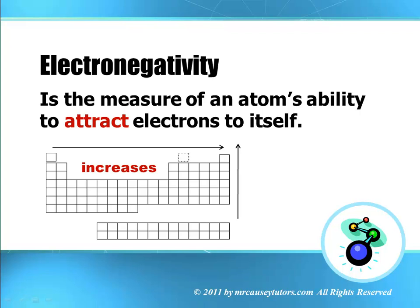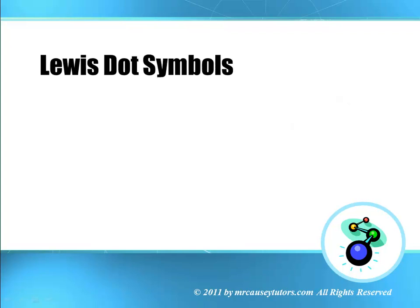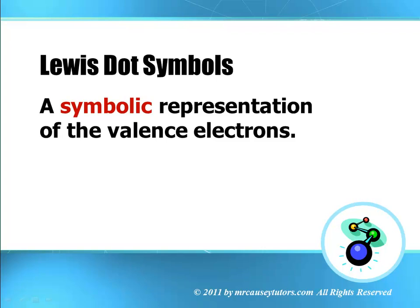Remember, noble gases do not have electronegativity. They do not want to give up electrons and they do not want to gain electrons. Lewis dot symbols: a symbolic representation of the valence electrons. And here's sulfur's representation. There we go. Very cool.